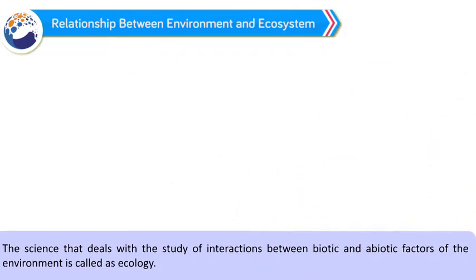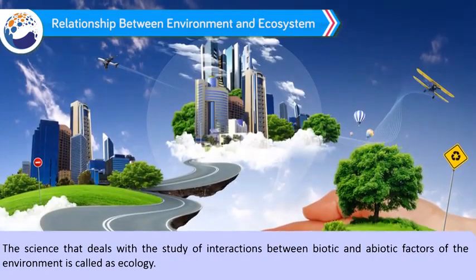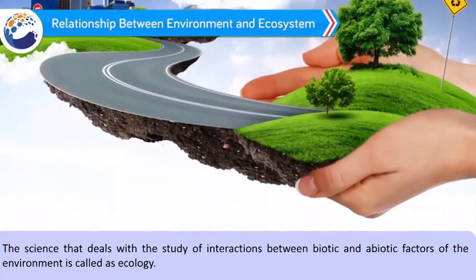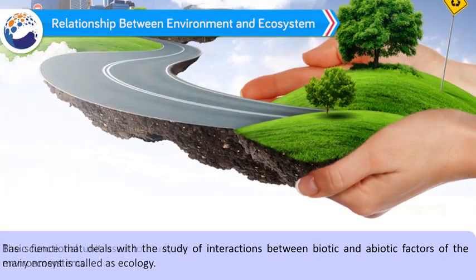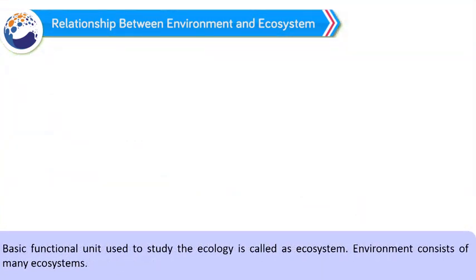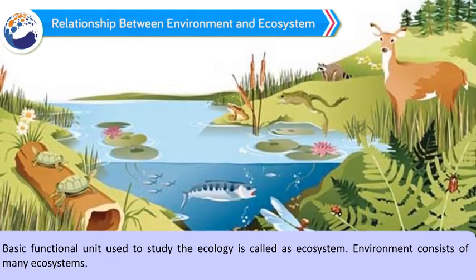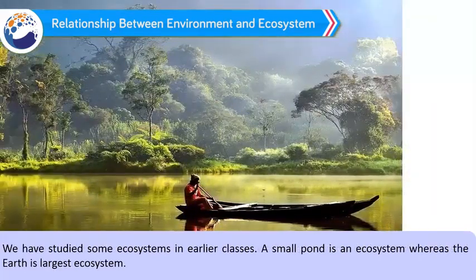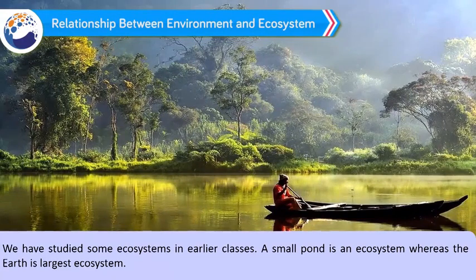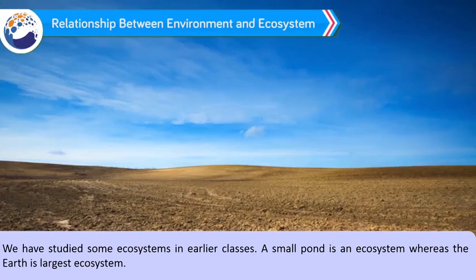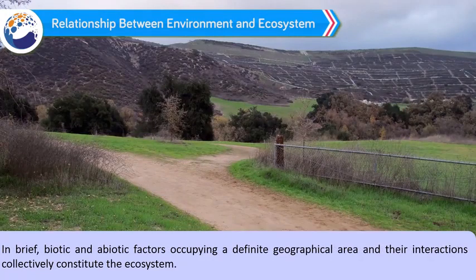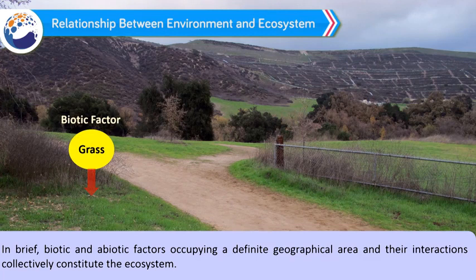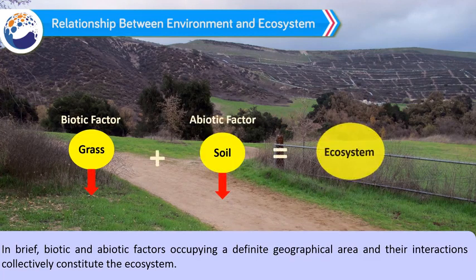The science that deals with the study of interactions between biotic and abiotic factors of the environment is called ecology. The basic functional unit used to study ecology is called an ecosystem. Environment consists of many ecosystems. A small pond is an ecosystem, whereas the earth is the largest ecosystem. Biotic and abiotic factors occupying a definite geographical area and their interactions collectively constitute the ecosystem.